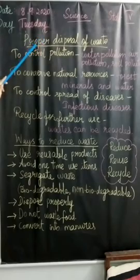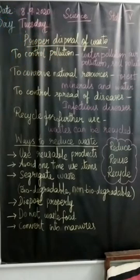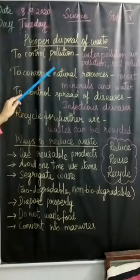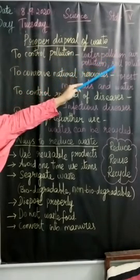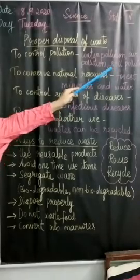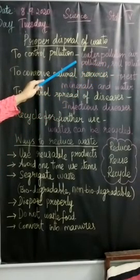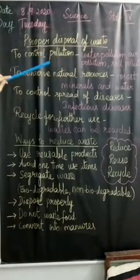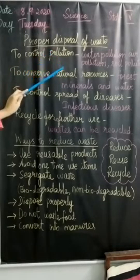We need to dispose this waste properly. Why? To control pollution. We know the different types of pollution: water pollution, air pollution, and soil pollution. These all make our environment unclean and not safe to use.